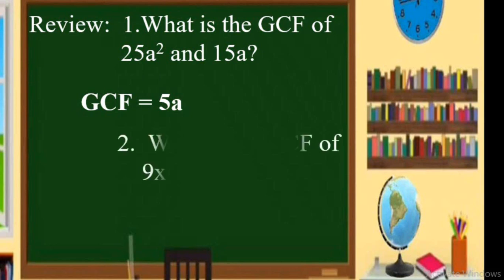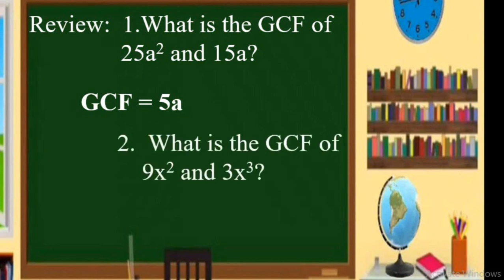Let us have another example. What is the greatest common factor of 9x squared and 3x cubed? Both of these terms, looking at their numerical coefficient, can be divided by 3. And both of these terms can also be divided by x squared. So the GCF of these two terms is 3x squared.